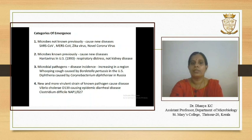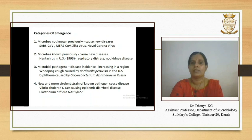Category 4 includes new and often more virulent strains of a known pathogen that cause disease. Examples are Vibrio cholerae, which causes epidemic diarrheal disease, and Clostridium difficile, which causes Clostridioides difficile-associated disease.